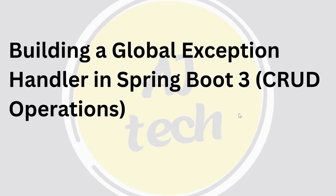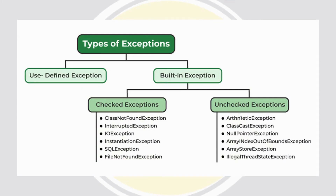Hi guys, welcome to the Spring Boot tutorial series. In this video we'll see global exception handling in Spring Boot — how to handle exceptions in Spring Boot. For example, if you're placing an order in an ecommerce application and that product is not available, they will give a message saying the product is out of stock. This is graceful termination of the application, because we are handling runtime errors. If it is not handled, it will show something like a blank screen.